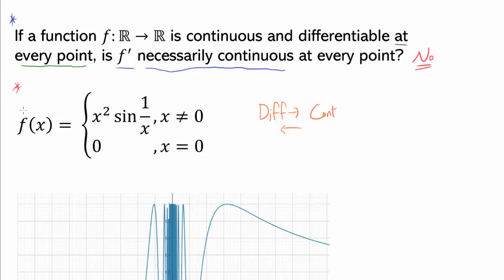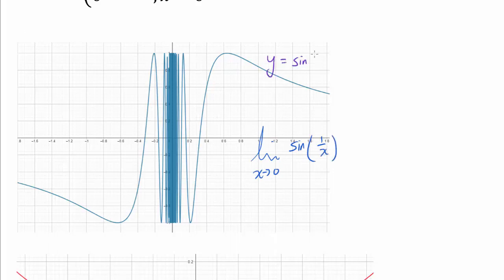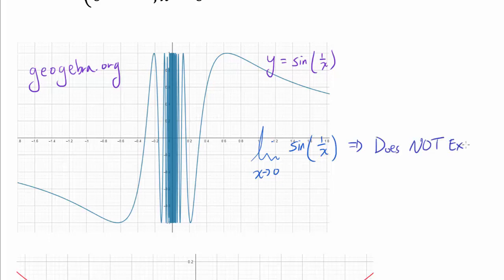As an example, we'll look at a specific function. But first, let's quickly review the limit as x approaches 0 of sine of 1 over x. This is the graph of y = sin(1/x) generated using GeoGebra.org. As you probably remember, this limit does not exist because we have infinite oscillations between 1 and negative 1. No matter what interval you pick centered at 0, there are infinitely many oscillations, so you cannot approach a single value.